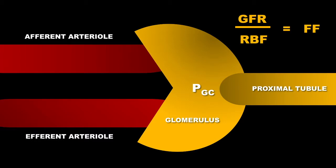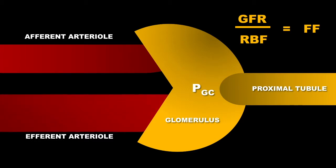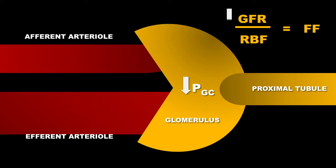If we dilate the efferent arteriole, it will decrease your hydrostatic pressure in your glomerular capillary. This will decrease your GFR, but it will increase your renal blood flow. The filtration fraction will go down.